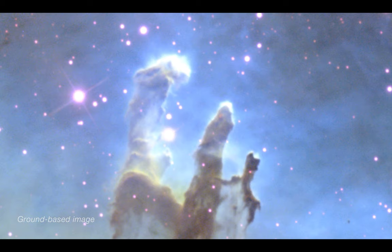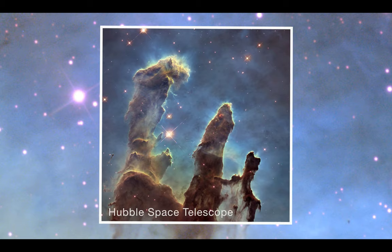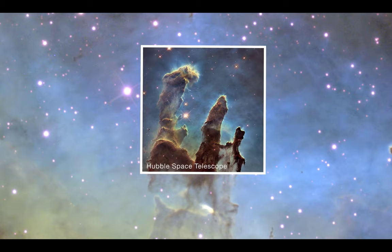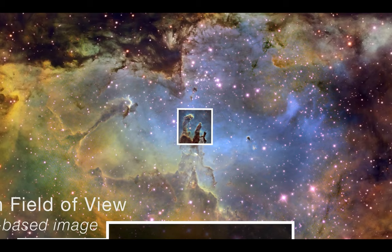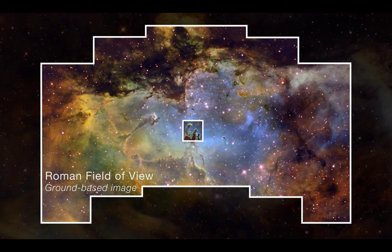Now one thing I do want to touch upon again is this fact that the Roman field of view is a hundred times that of Hubble. Now what does this mean? So here we have a video showing the pillars as imaged by Hubble and this is interstellar gas and dust in the Eagle Nebula about 6,500 to 7,000 light years from Earth and as we zoom out we see that Roman will cover a significantly greater area, a hundred times more in fact and it is therefore a much more effective telescope.